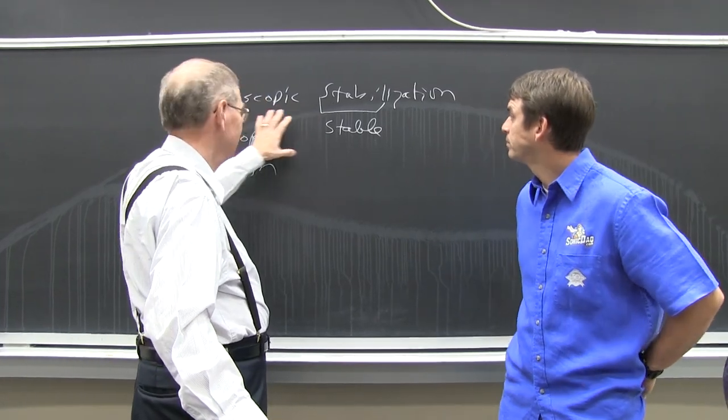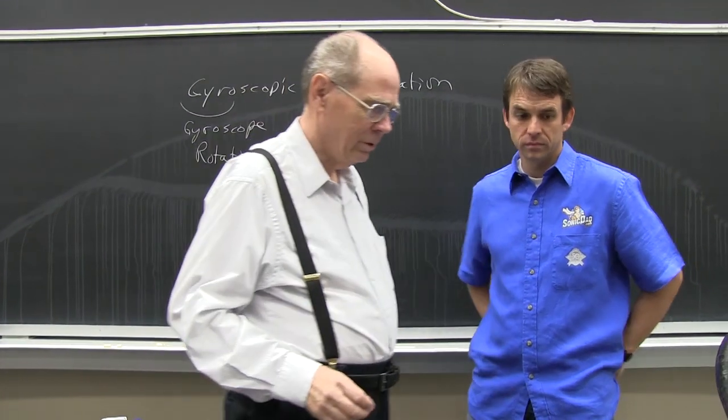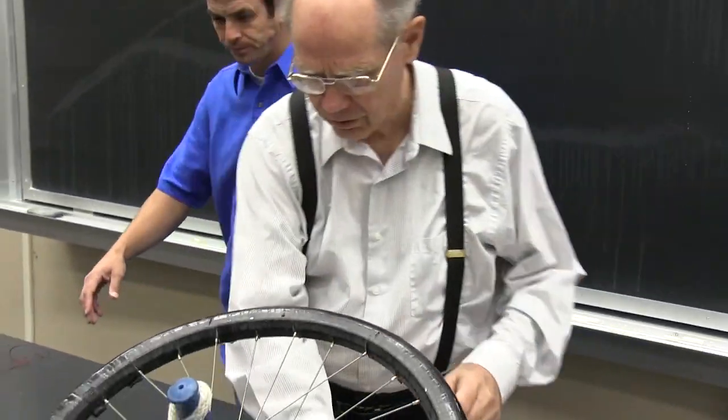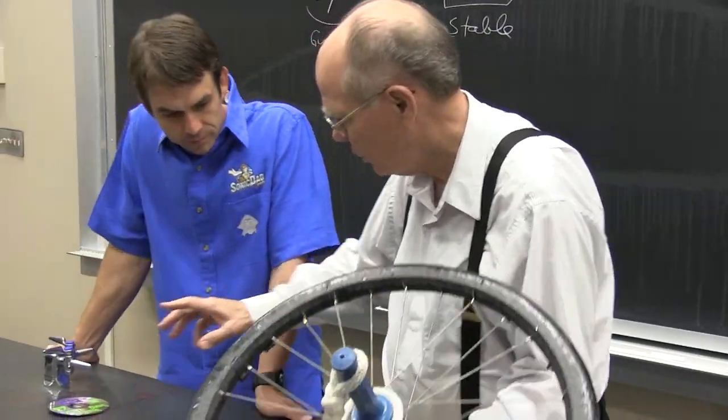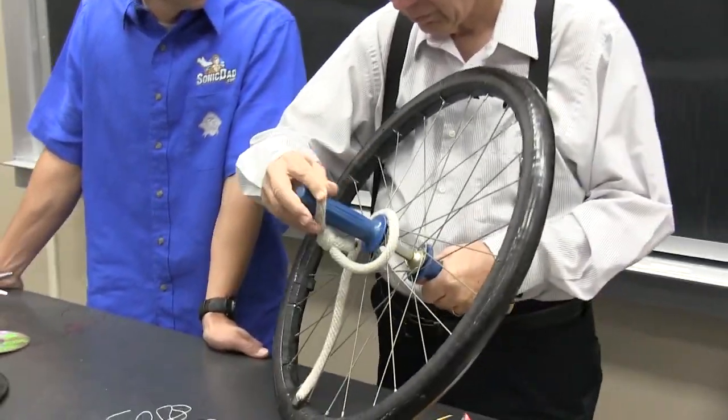So that's the stabilization part by rotation. Now what about the precession? Well, the precession has to do with when you try to change the direction that axis is pointing.